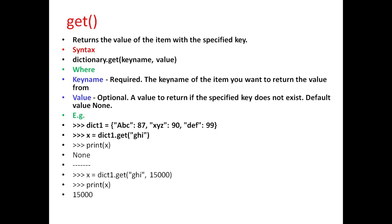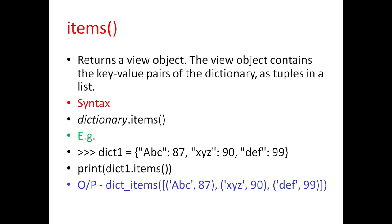For example, if we have defined dictionary dict1 with these elements and if we give the command x equal to dict1.get('ghi'), when we print x it will display the output None since the key 'ghi' is not available in dict1. And if we give the command x equal to dict1.get with key name 'ghi' and value 15000, when we print x it will display 15000, since 'ghi' is not available in dict1 and it returns the specified default value.